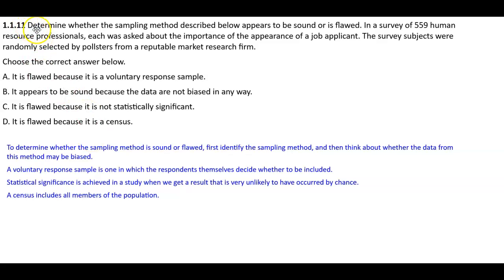Section 1.1.11. Determine whether the sampling method described below appears to be sound or is flawed. In a survey of 559 human resource professionals, each was asked about the importance of the appearance of a job applicant. The survey subjects were randomly selected by pollsters from a reputable market research firm. Choose the correct answer below.